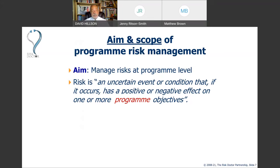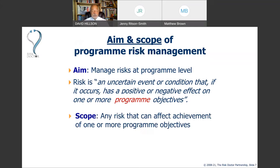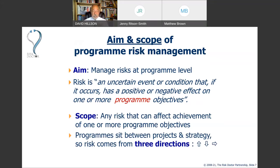The aim of programme risk management is to manage any uncertainty that, if it occurred, would affect programme objectives — which is immediately different from project risk management, which focuses on project objectives. In scope is any risk that can affect achievement of one or more programme objectives. Because programmes sit in the middle between projects and strategy, the scope of programme risk management has a number of different directions to consider.